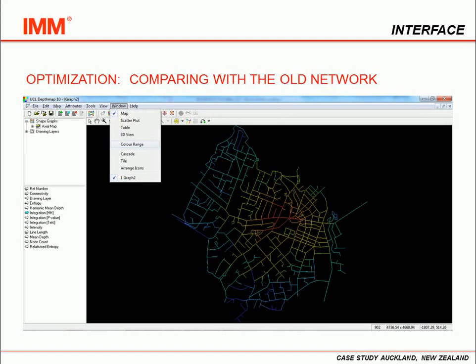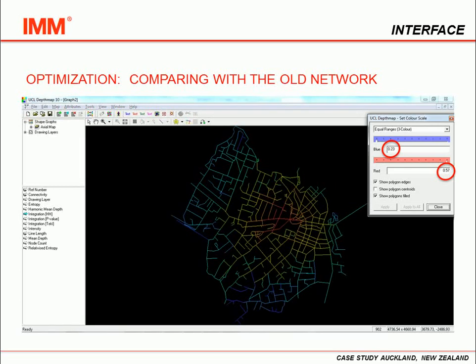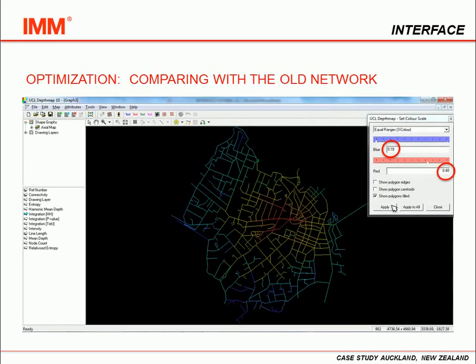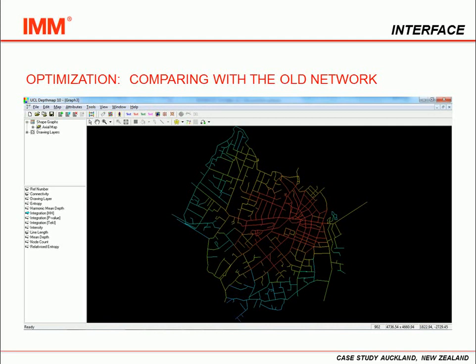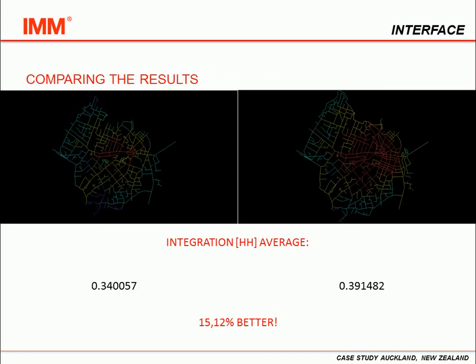In order to have this new map on the same scale as the old one, we click on Window and then Color Range. Notice that now there are new values on the scale. To make comparison between the maps possible, we use the same scale — in this case, 0.18 and 0.48 from the old map. Comparing the two maps, the old one has an integration average value of around 0.34 and the new map 0.39, meaning an improvement of 15.12% in the integration of our network.